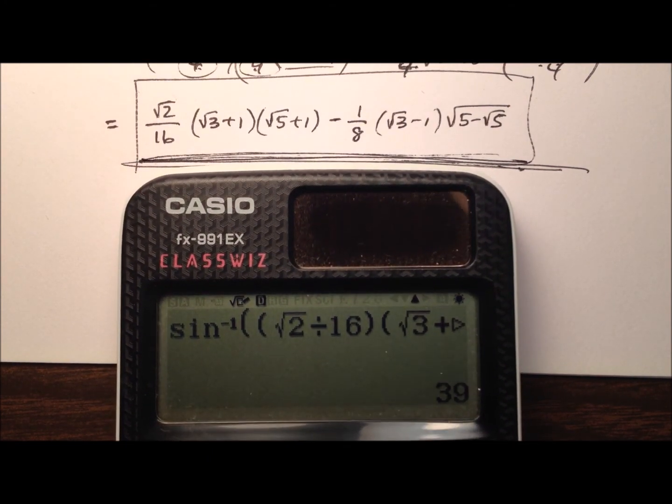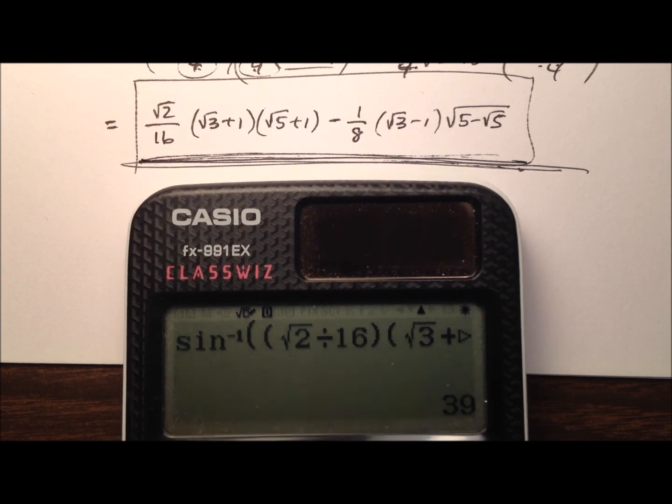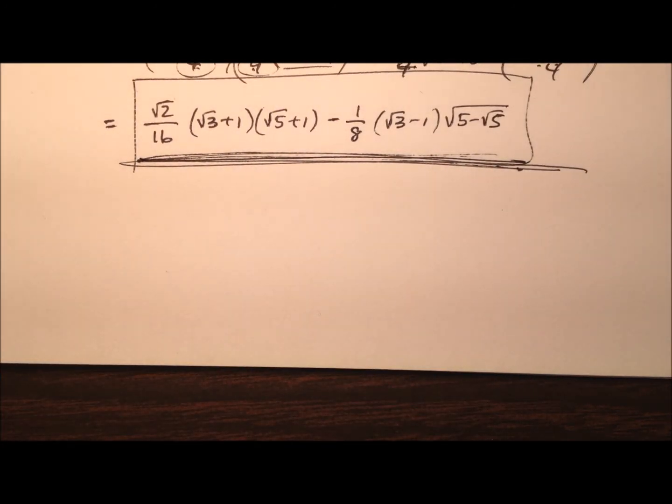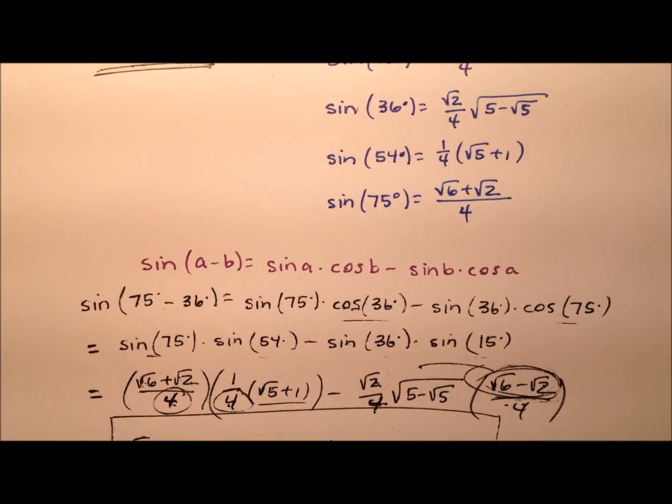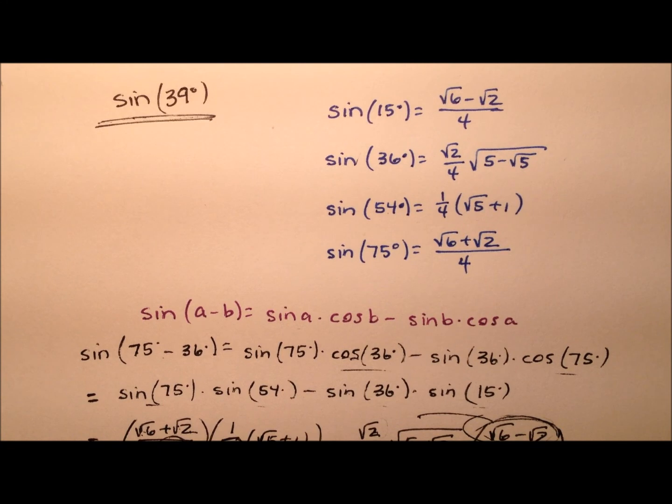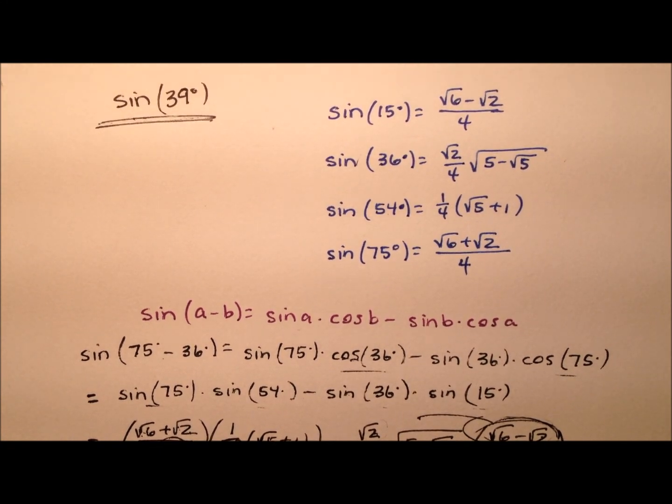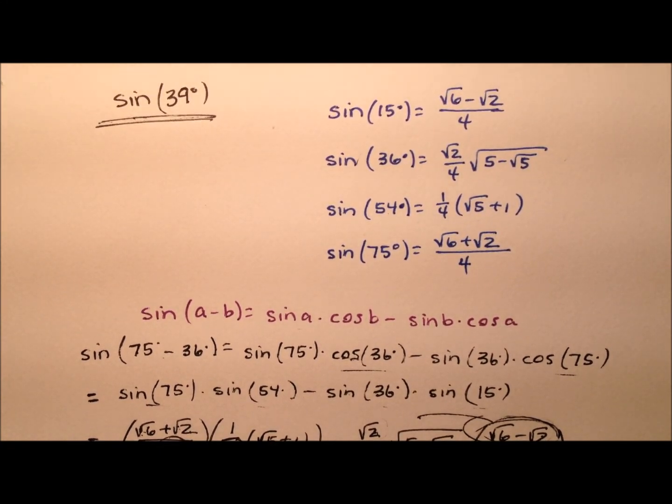So this is the exact value for the sine of 39 degrees and we got it by using a subtraction identity here for sine or the difference identity and also these four values for sine that we found in other videos. And these four values of sine have been found from scratch and those videos, you'll find links for them in the description for this video below.